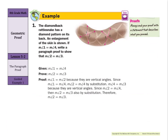We are given that the measure of angle one is equal to the measure of angle four — step one is to list the given information. Step two is to state what is to be proven: we want to prove that the measure of angle two equals the measure of angle three. The proof proceeds as follows: the measure of angle one equals the measure of angle two because they are vertical angles. Since the measure of angle one equals the measure of angle four (given), the measure of angle two equals the measure of angle four by substitution. Then, since the measure of angle four equals the measure of angle three by vertical angles, and two equals four, two must equal three.